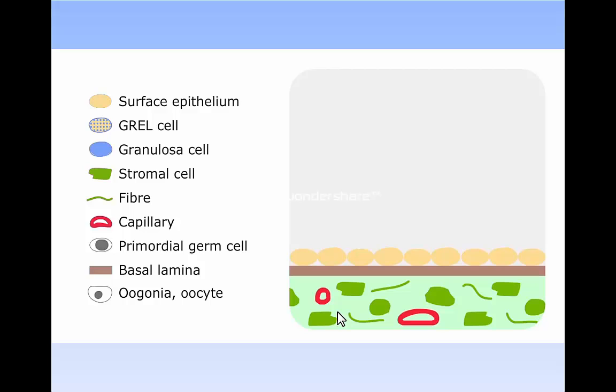Let us begin with the mesonephros. It is covered by an epithelium in yellow, with a sub-epithelial basal lamina shown in brown, separating the epithelial layer from the stroma, shown here in green.